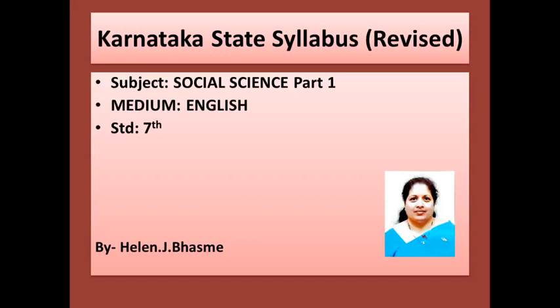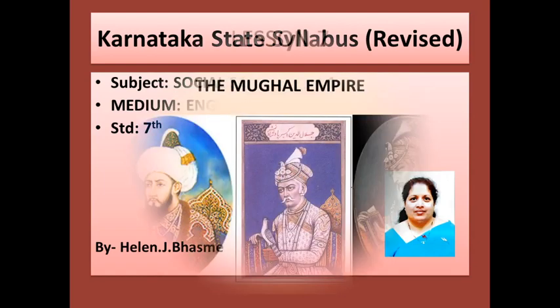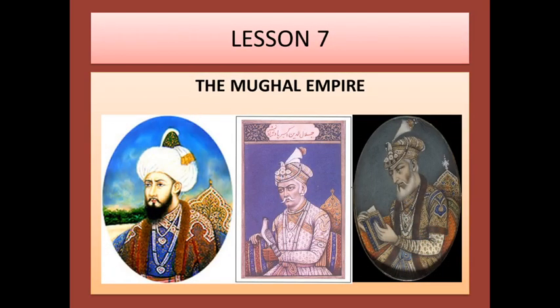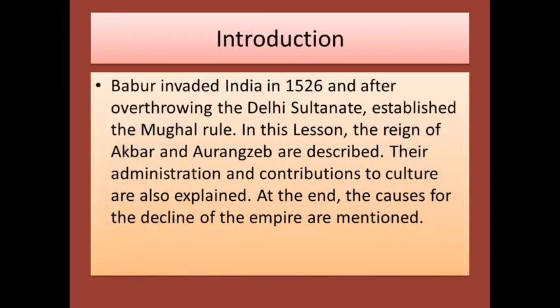Hello everybody. Today we are going to do Social Science Lesson No. 7, that is the Mughal Empire. Let me tell you about the introduction of the lesson. Babur invaded India in 1526 and after overthrowing the Delhi Sultanate, established the Mughal rule. In this lesson, the reign of Akbar and Aurangzeb are described. Their administration and contribution to culture are also explained. At the end, the causes for the decline of the empire are mentioned.